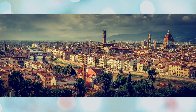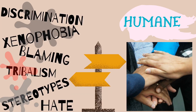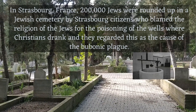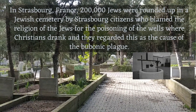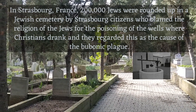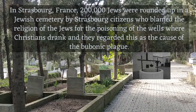As Dr. Snowden addresses in his book, the outbreak of infectious diseases presents us with two options. In this outbreak of COVID-19, we can either fall into the traps of xenophobia, creation of stereotypes, and tribalism, or we can try to build a better world that is more humane and rational. During the spread of bubonic plague, pseudo-ideas including xenophobia, divisiveness, alienation, blame, and condemnation emerged. In Strasbourg, France, 200,000 Jews were rounded up in a Jewish cemetery by citizens who blamed Jews for poisoning the wells where Christians drank, regarding this as the cause of the bubonic plague. The Jews were compelled to either renounce their religion or be executed, and that day, half of the Jews who stuck to their religion were burned alive.